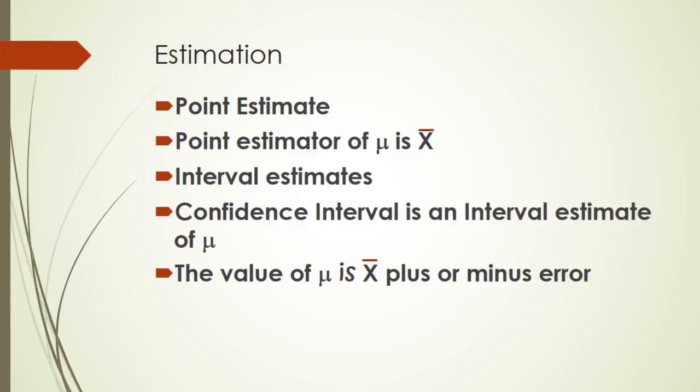Very rarely is the mean of the sample going to actually equal the mean of the population. Instead, what we do is we create what we call interval estimates or confidence intervals, where we say that the value of the population mean is the value of the sample mean, x bar, plus or minus some error. So instead of saying a point estimate, you would say the mean is 2. The confidence interval or interval estimate, you would say the mean is 2 plus or minus 1, or the mean is less than 3 or greater than 1 or something where there's a range of possible answers.